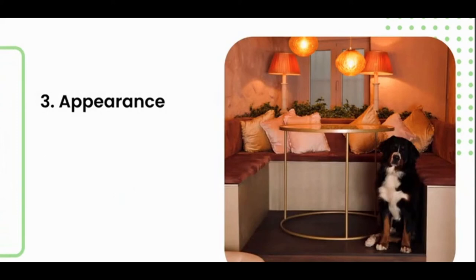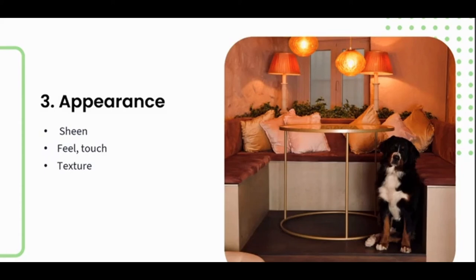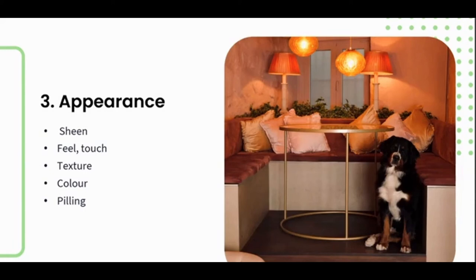When it comes to the appearance of the fabric, consider: the lustre or sheen — primarily determined by fiber type and the light reflecting off the surface; the feel and touch of the fabric in the hand; the texture — the tactile feeling; and the colour — your hue, shade, tones, and vibrance, including whether it has been dyed. Lastly, an important element: pilling — when fibers break away and form little balls on the fabric surface. Pilling typically occurs in areas of heavy use, such as a couch that has been sat on extensively.